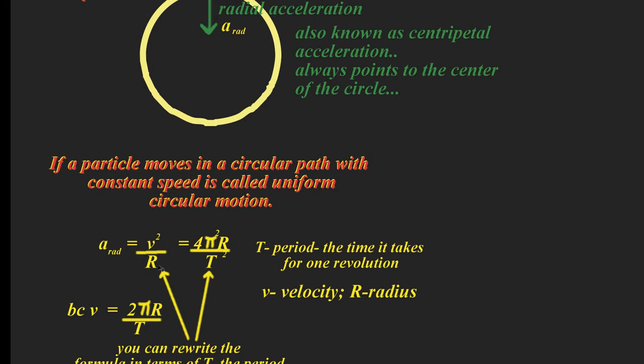Now, if you know the period, for instance, you can substitute in the formula. Period would equal 2πR over velocity. And if you solve for velocity, just switching the two, you can plug in what velocity equals into here. You can get this equivalent formula for the radial acceleration. Just in case you forgot, the period is the time it takes for one full revolution. And velocity and radius are the other variables in this equation.